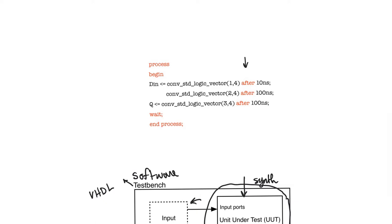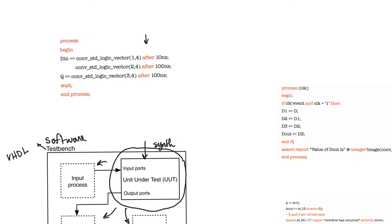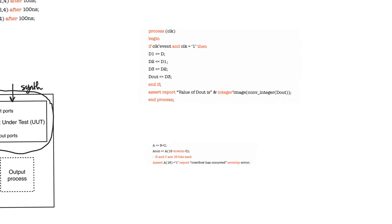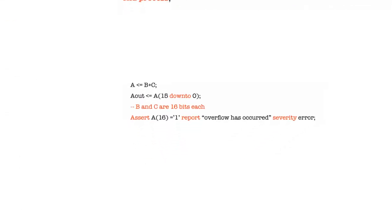The second construct we almost exclusively use with test benches is something called an assert statement. Assert statements are embedded test statements within the test bench. What they do is look at a condition, and if that condition is met, they perform a certain assertion. Let's look at an example of using the assert statement used concurrently — written outside of a process, existing concurrently with all other statements outside the process.